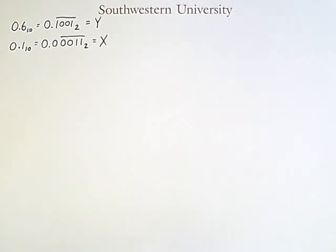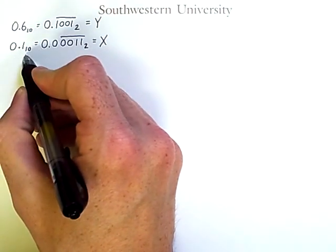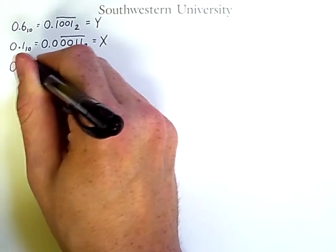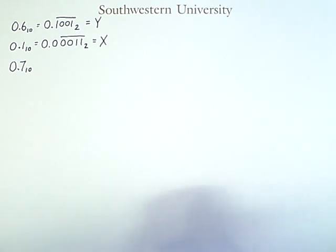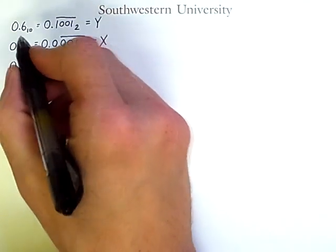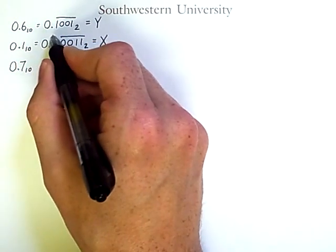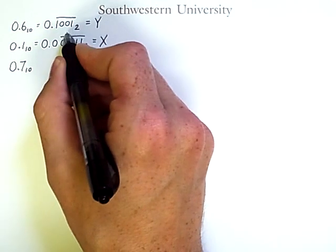This video will demonstrate how floating point addition works and also some of the pitfalls of this operation. We're going to take two numbers, 0.6 in decimal and 0.1 in decimal, and add them. Now we know the result should be 0.7, but it won't be. The reason for that is that 0.6 in decimal actually has an infinite repeating representation as a binary fraction.